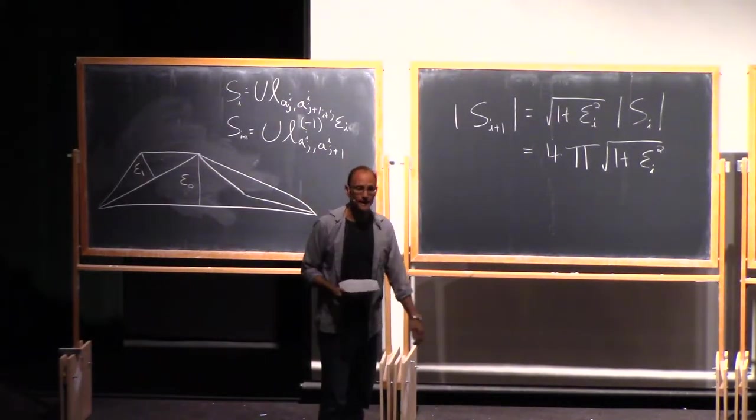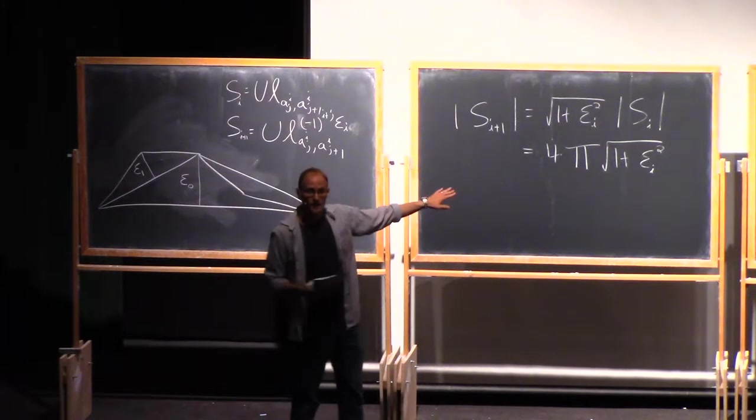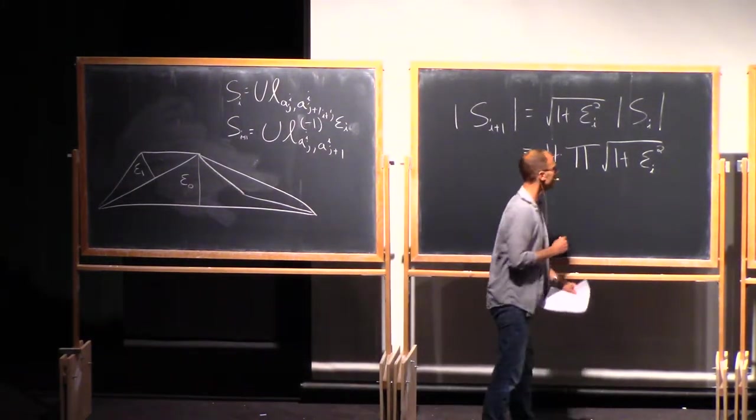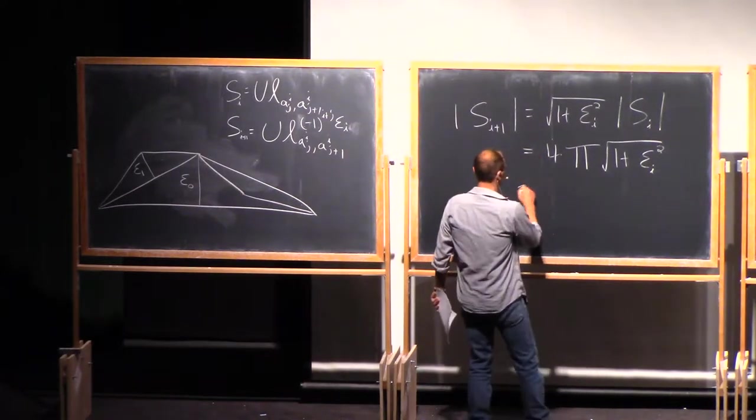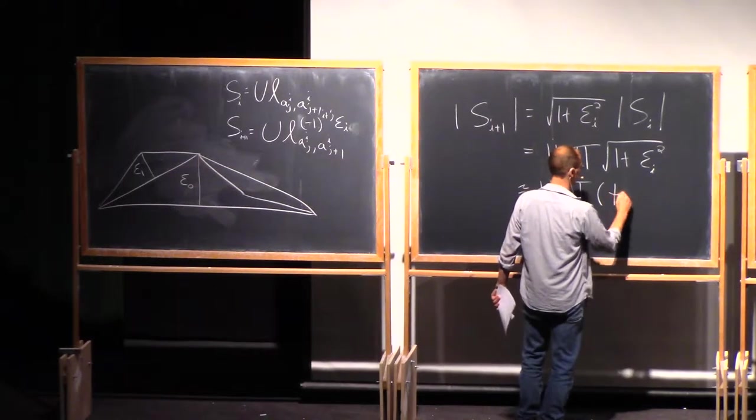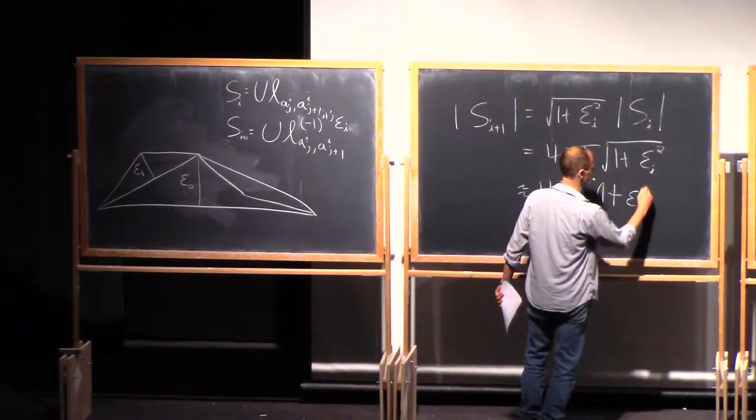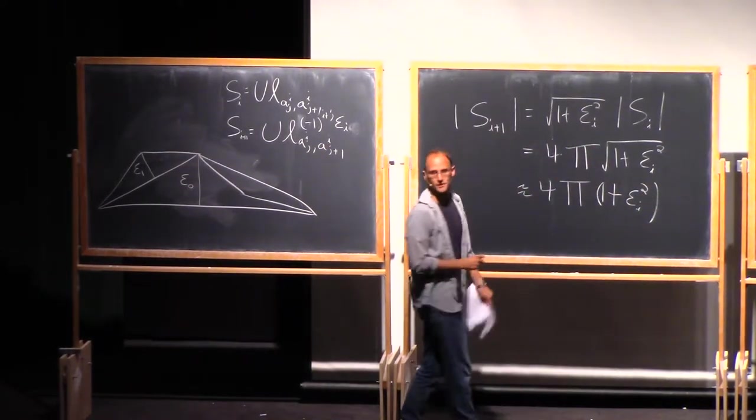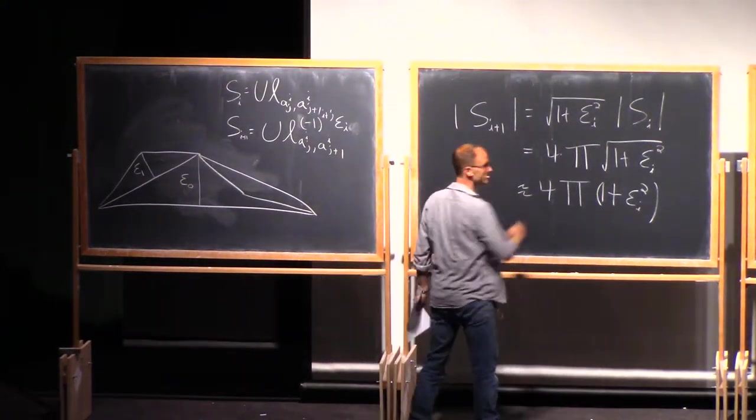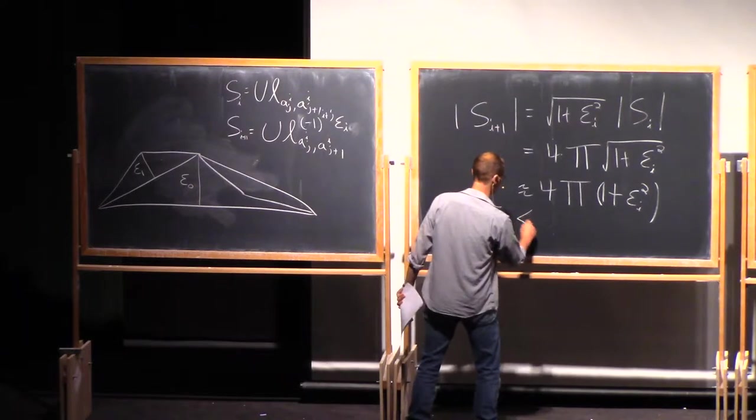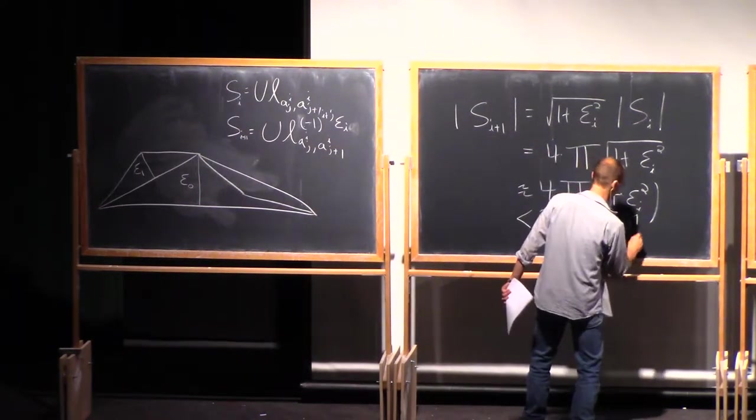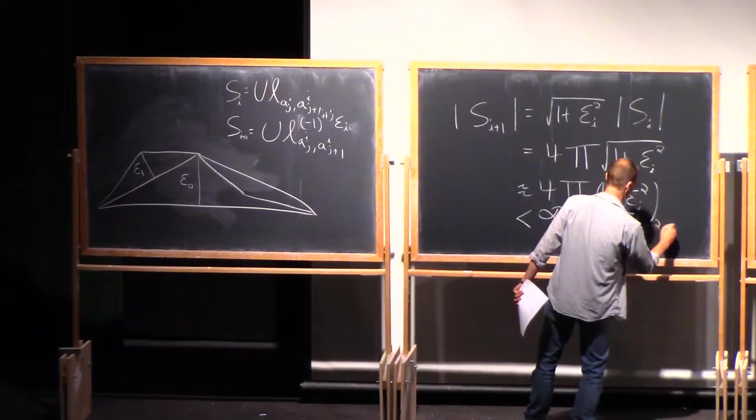And you get a pretty clear answer from this. And the answer is pretty interesting because the square root of 1 plus epsilon squared. This is, roughly speaking, 4 times the product of 1 plus epsilon i squared. So Taylor series your guy out a little bit if you want because these are small. And this here is going to be finite if and only if the sum of epsilon i squared is finite.